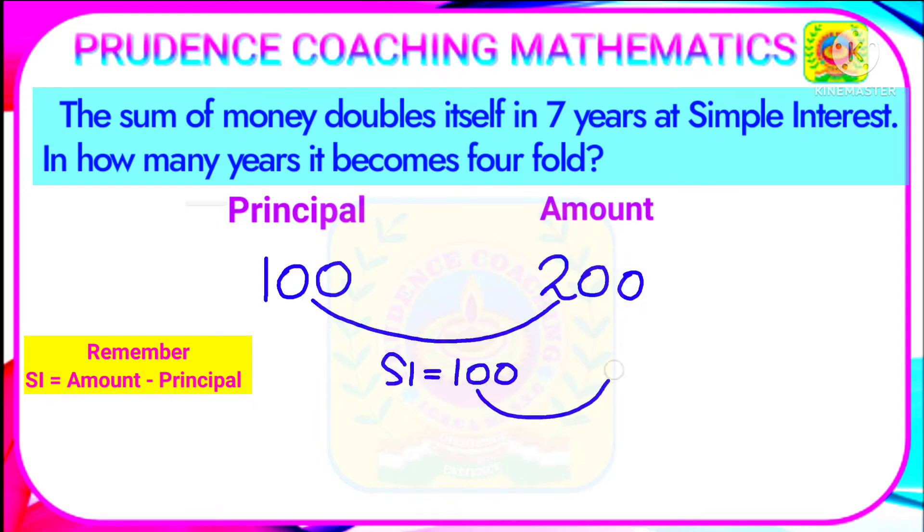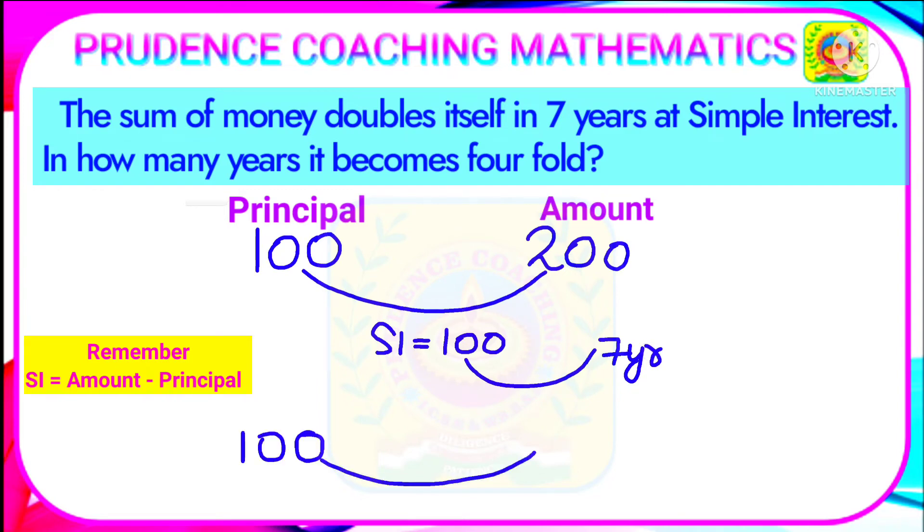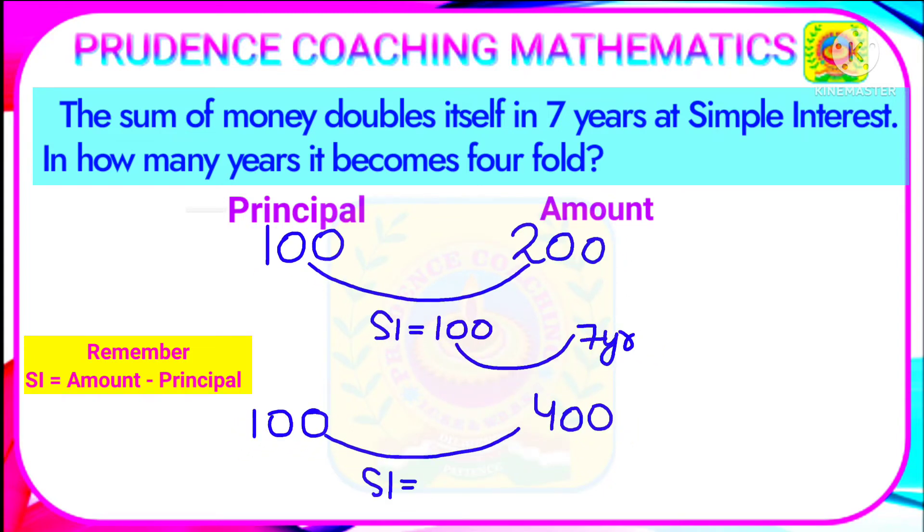So in seven years it is becoming hundred SI, but you are asked to find out in how many years it becomes four folds, that means four times. Then according to this, if hundred is the principal, then the amount will be hundred into four, that is four hundred. So here SI what you are getting is four hundred minus hundred, that is three hundred.